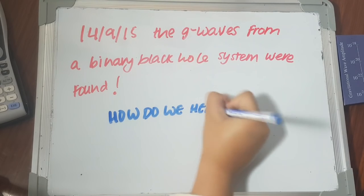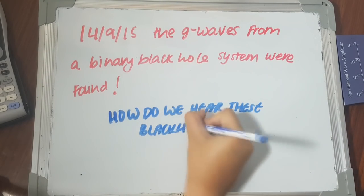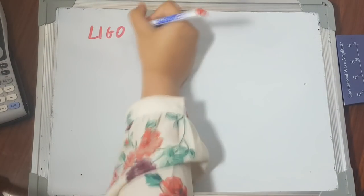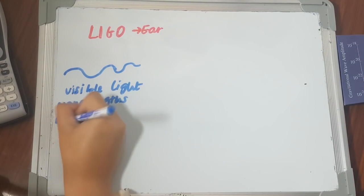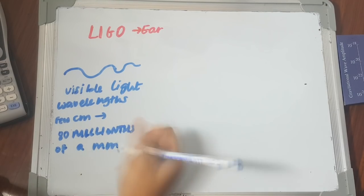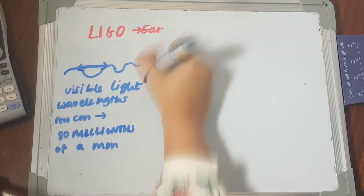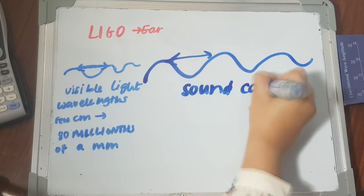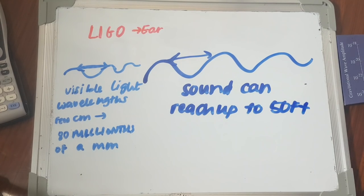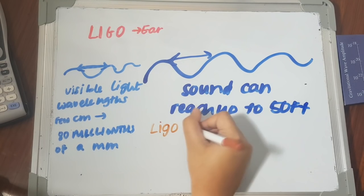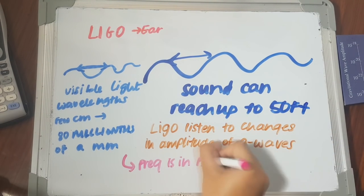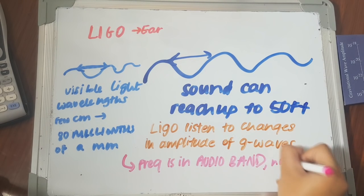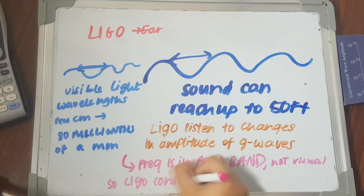So how do gravitational waves allow us to hear the universe? So LIGO operates as an ear. First of all, visible light has a much, much smaller wavelength than sound, which could reach up to 50 feet long. Sounds are characterized by pitch, tone, rhythm, volume. So LIGO listens to the changes in amplitudes of the gravitational waves in a frequency that is in the audio band, thus allowing LIGO to convert the gravitational waves into sounds.